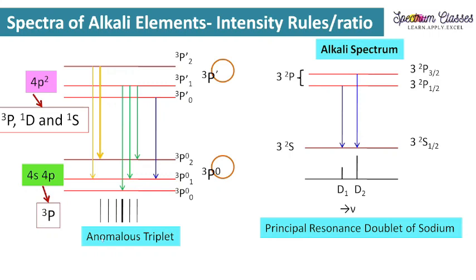The second point is anomalous. Why are we calling it anomalous? If we are having more number of transitions available in a given compound then they may have different separations between the lines and their intensities may be different. So on the basis of their intensity and separation between the lines, if that is different and not following any pattern, then that is called anomalous. Otherwise we are calling it simple triplets or compound triplets.